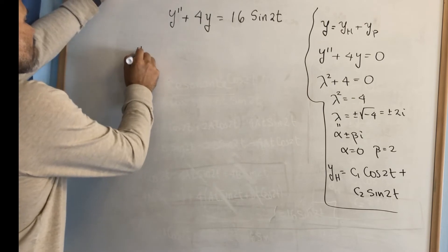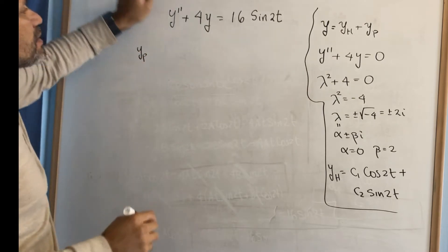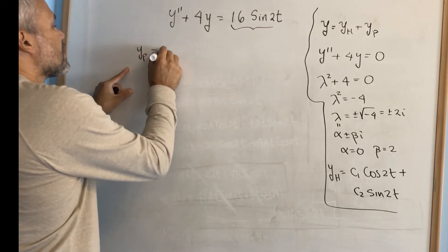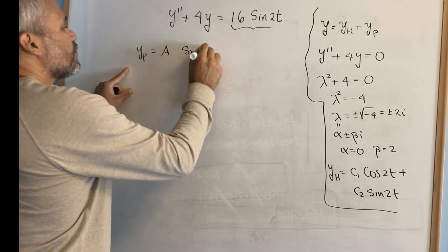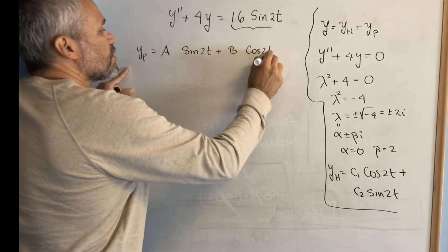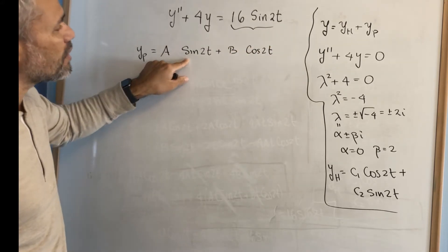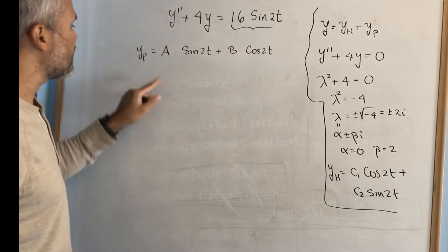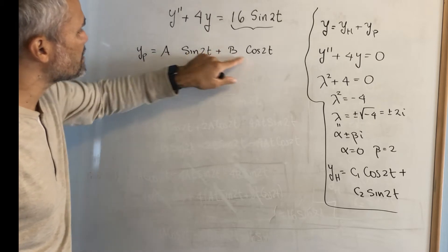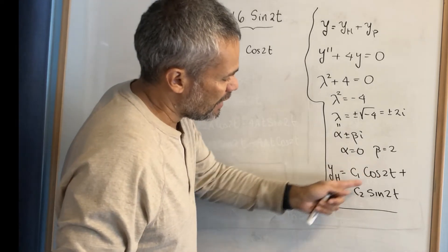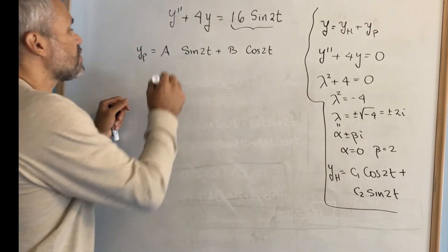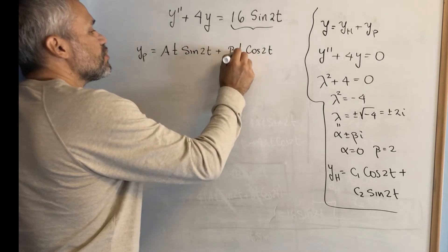Now we look for a particular solution. We look at the non-homogeneous part and look for something similar — in this case, a sine of 2t plus b cosine of 2t. Remember that any time you invite sine of 2t, you need to invite cosine of 2t. We need to check if we need a second guess by seeing if these terms are multiples of any terms of the homogeneous solution — and they are — so we need a second guess, which is to multiply by t.